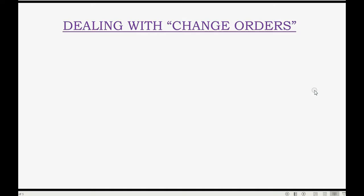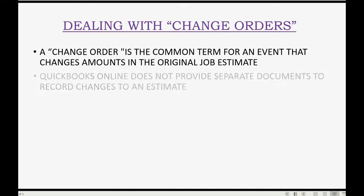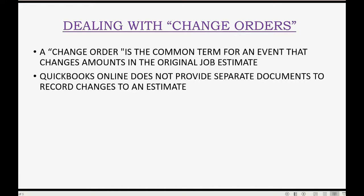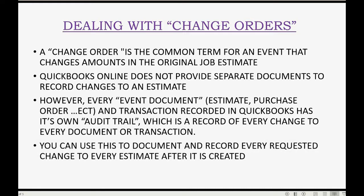When dealing with changes to an original estimate or contract, you should know that a change order is a common term for an event that changes amounts in the original job estimate. QuickBooks Online does not provide separate documents to record changes to an estimate. However, every event document like an estimate or a purchase order, and every transaction recorded in QuickBooks, has its own audit trail, which is a record of every change to that document or transaction. You can use this audit trail to document and record every requested change to every estimate after it is created.